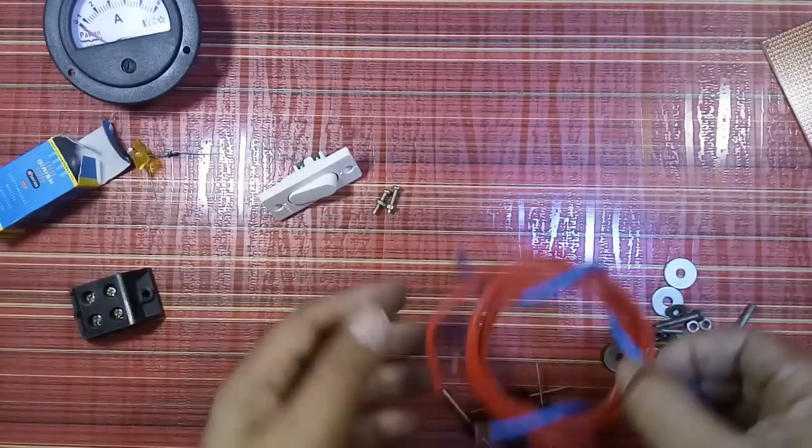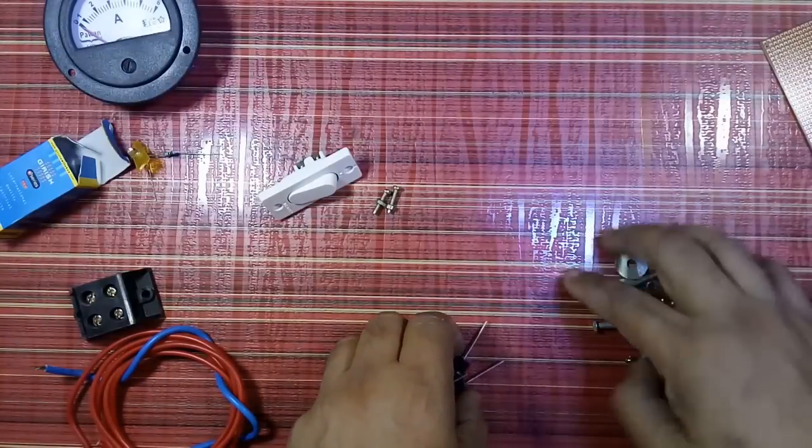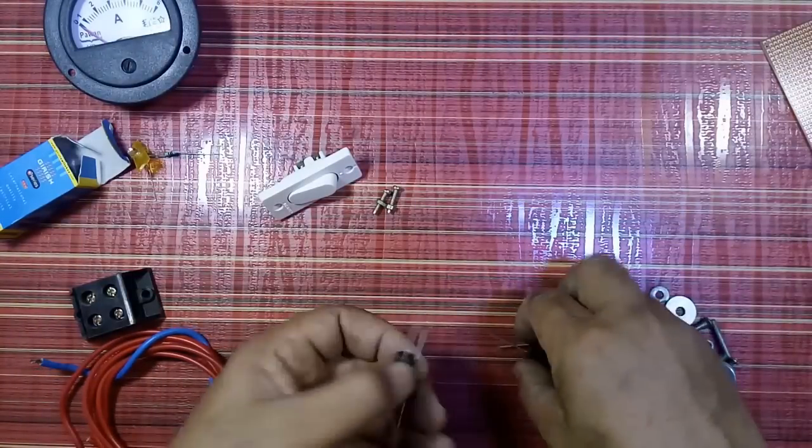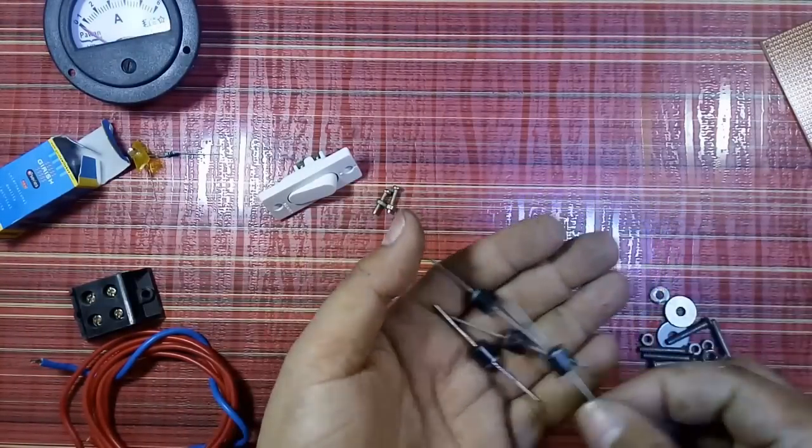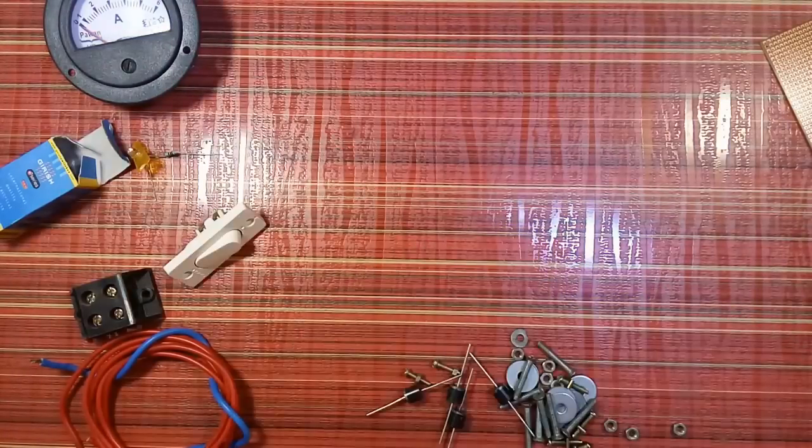Some wires, screws and nuts with washer, and four diodes, each diode is having value 6A.